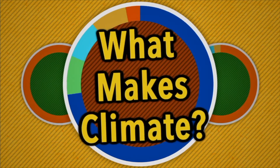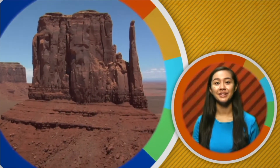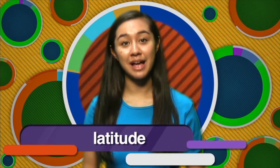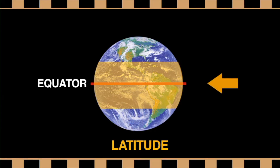What makes climate? There are several factors. The climate of any location is affected by its latitude, terrain, and altitude, as well as nearby water bodies. The first factor is latitude. Latitude is the distance north or south from the equator. Places closest to the equator have a warmer climate than places further away.